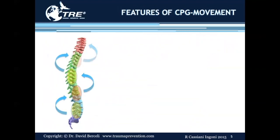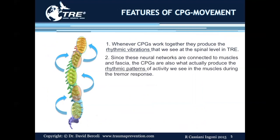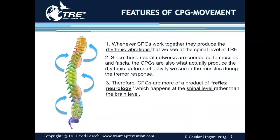Additional features of central pattern generator movement: whenever central pattern generators work together, they produce the rhythmic vibrations that we see at the spinal level in TRE. Since these neural networks are connected to muscles and fascia, the central pattern generators are also what actually produce the rhythmic patterns of activity or movement we see in the muscles during the tremor response. Therefore, central pattern generators are more a product of reflex neurology, which happens at the spinal level rather than the brain level.